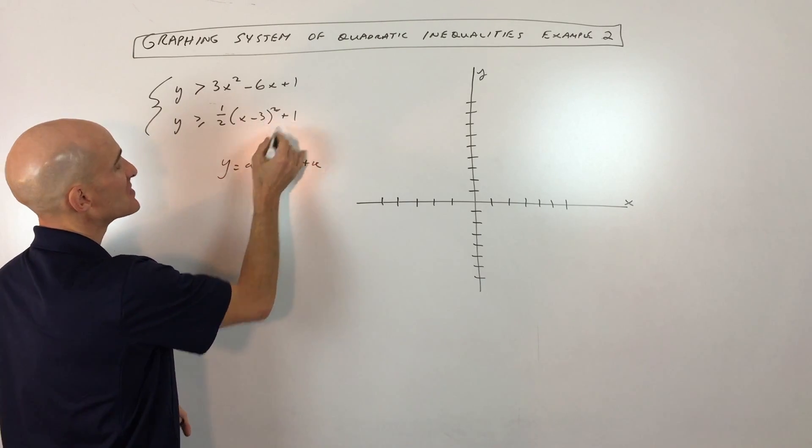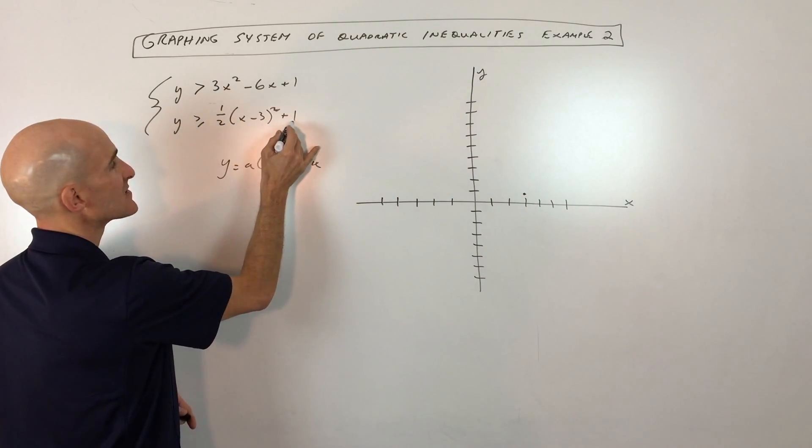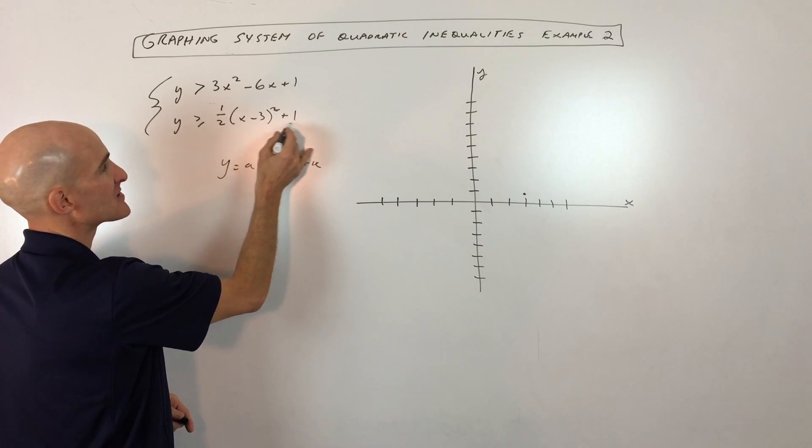h,k is the vertex. You can see the vertex is going to be at 3, 1. So it's the opposite. This is the same as the signs. Opposite sign, same sign.